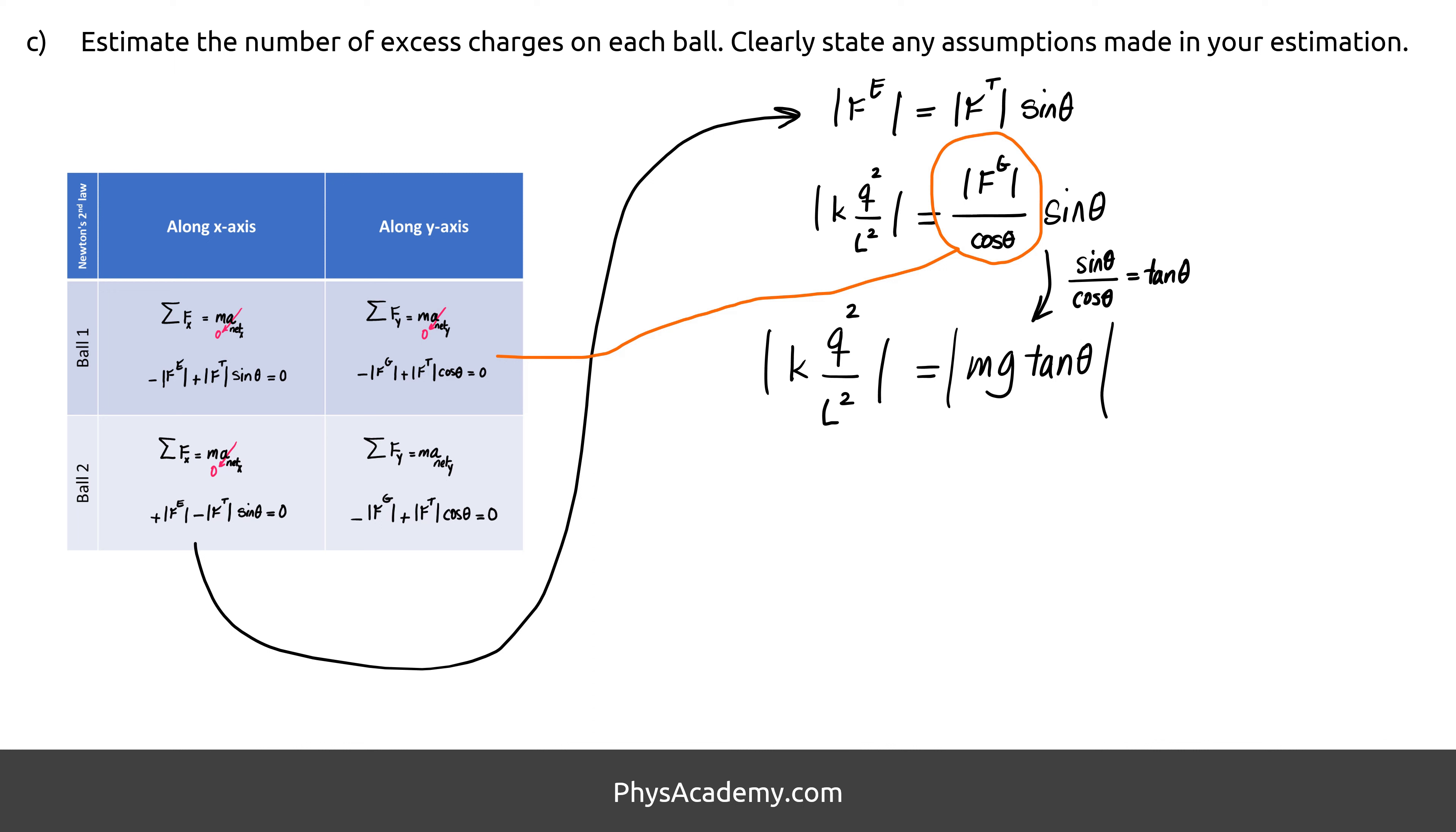All right, let's see how we are doing up to here. K is known. L is half a meter and known. Q is our ultimate unknown. M is the mass of a ping-pong ball, which is 3 grams. G is 9.8 meters per second squared, and theta is 30 degrees. Perfect, so other than Q, everything else is known.